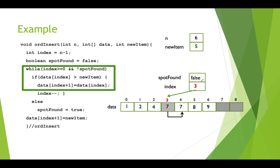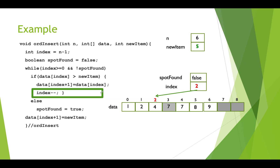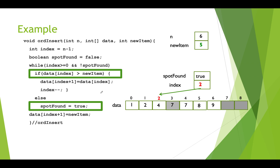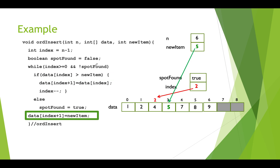Index is still greater than zero and spotFound is still false. What's in index 3 is 7 — 7 is bigger than 5 — so we copy it to the slot to the right and decrement index. Now we're pointing at slot 2, and the value there is 4. We check: is 4 greater than the item we want to insert, which is 5? This is no longer true, so we don't do any moving or copying. In the else part of the if, we set spotFound to true. When we come back to the while loop, not true is false, so the loop exits.